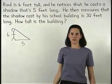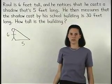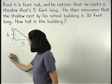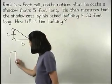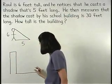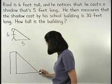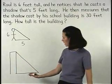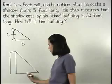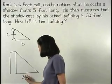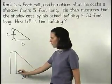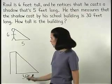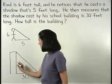Next, let's draw a picture of the school building and its shadow. We know that the shadow cast by the school building is 30 feet long and we're asked how tall the building is, so we can use x to represent the height of the building.